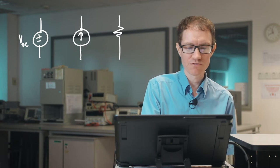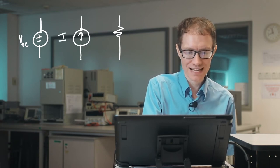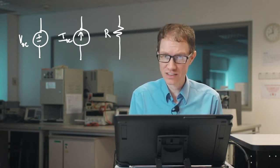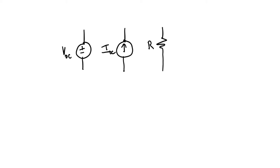Let me label this VDC, let me label this IDC, and let's label this R. What does it mean for a circuit element to be linear or nonlinear? Linearity is a very important property, both in circuits and in mathematics. One way we can think about linearity would be to make a plot of the current versus voltage characteristics of a circuit element, and then see how it looks.